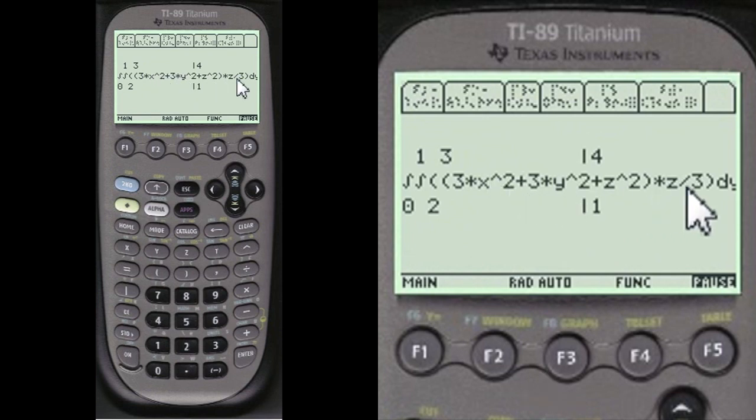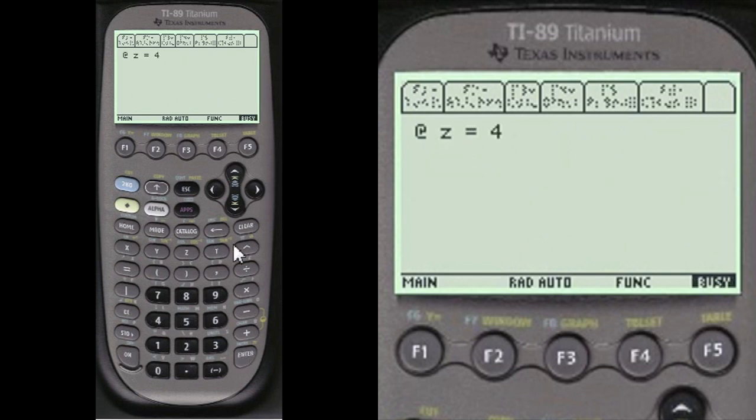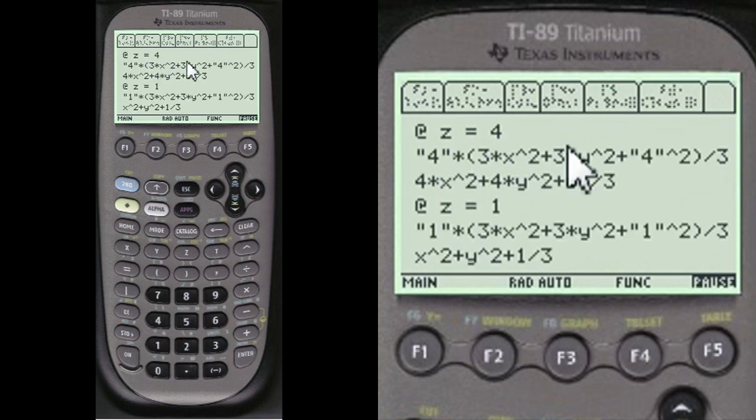it comes to this right here. Write this on your paper. I'm going to do it over 4 and 1. At z equals 4, you put parentheses around. When you see the quotation marks, which is the only way I can do with this program, you put parentheses around these. Because you're substituting z equals 4 for all the z's in this.